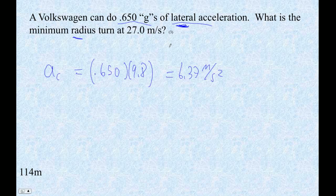And now we're going to solve, what are we solving? We're solving for the radius. So we're going to go 6.37 meters per second squared equals 27 meters per second squared divided by R.